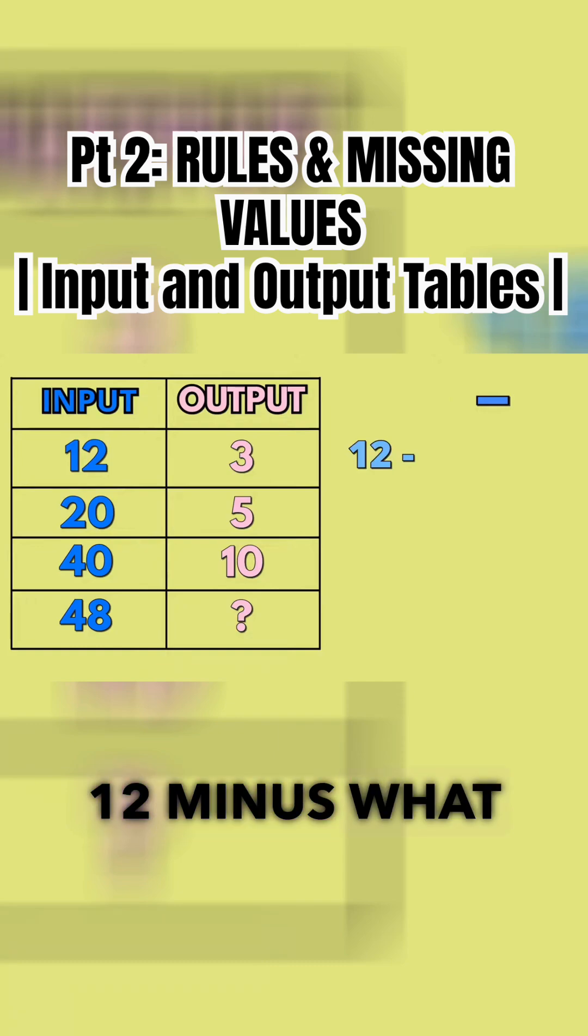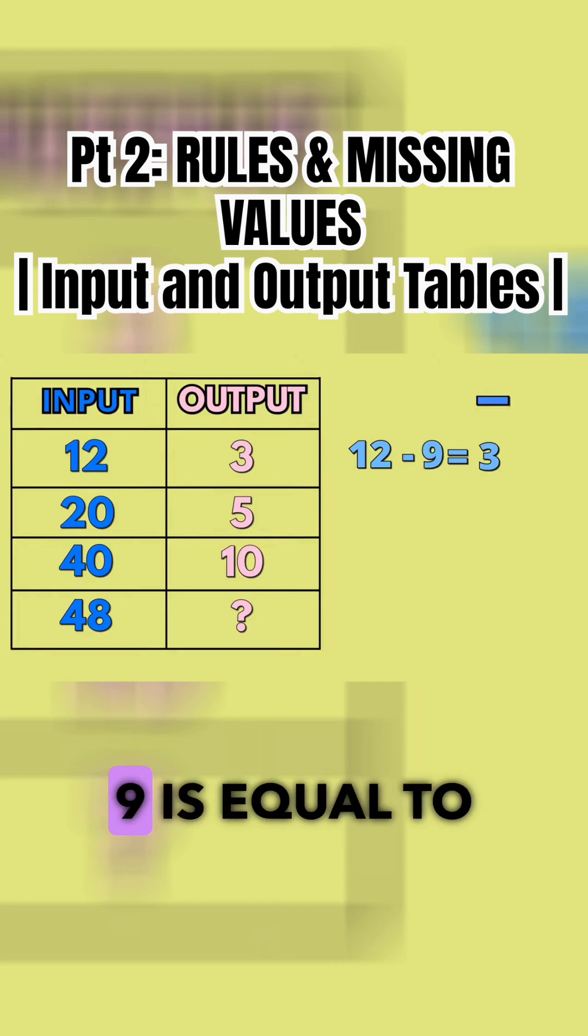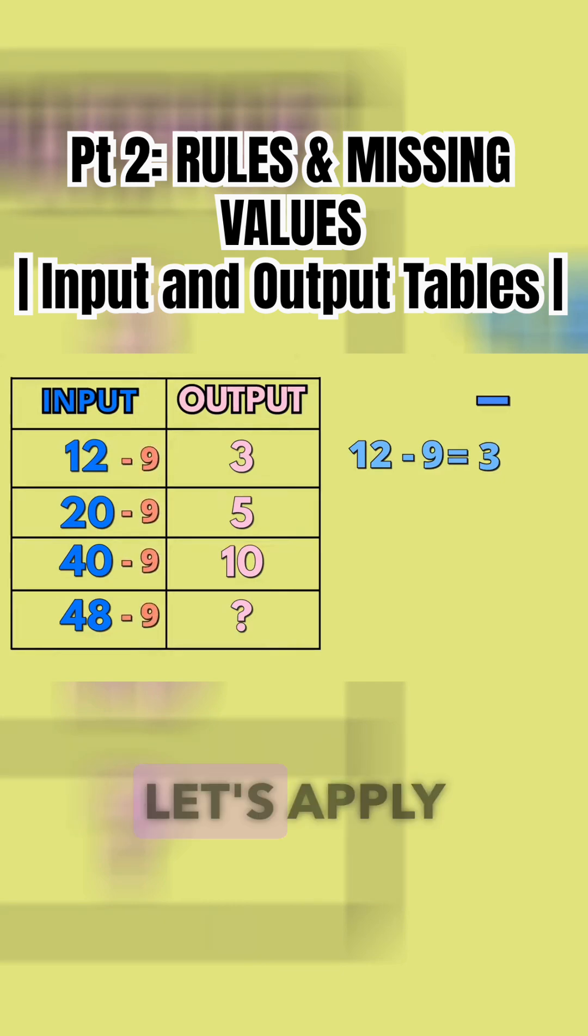12 minus what number gives us 3? We know that 12 minus 9 is equal to 3. Our rule might be subtracting all of our input values by 9. Let's apply our rule.